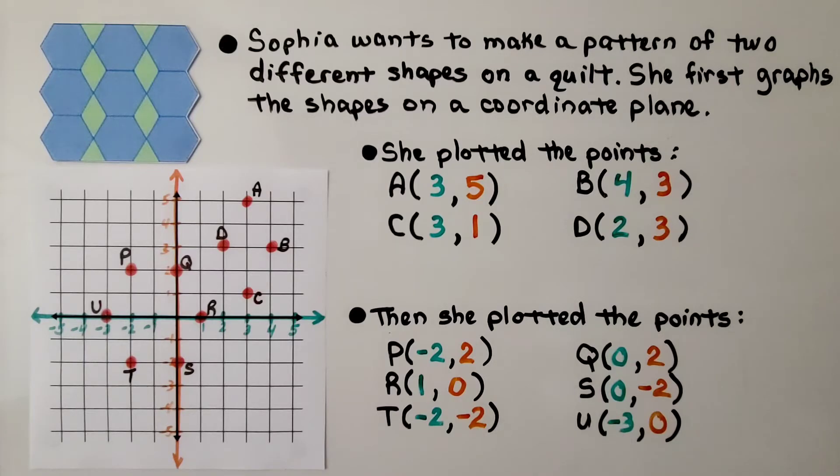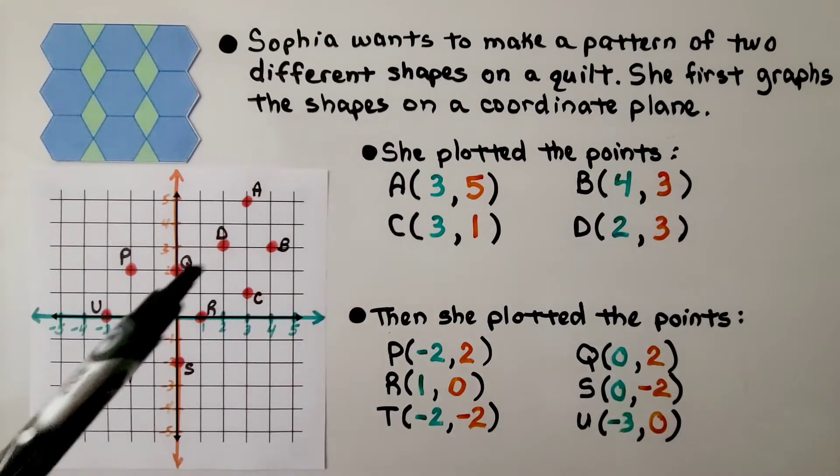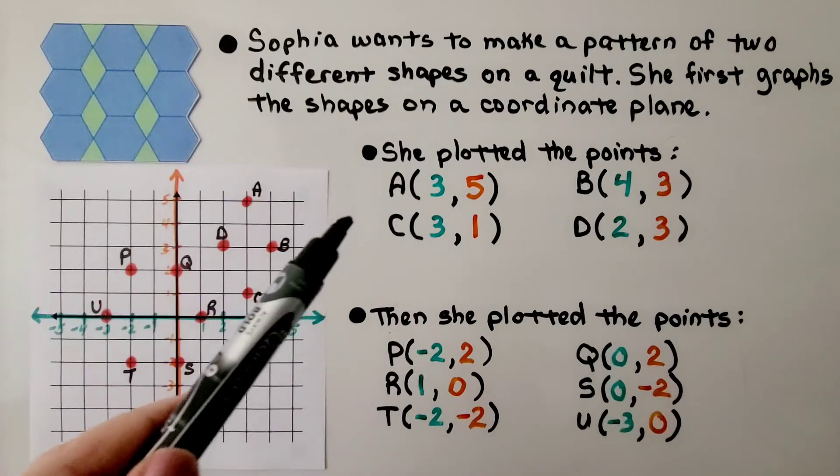Sophia wants to make a pattern of two different shapes on a quilt. She first graphs the shapes on a coordinate plane. So we have a hexagon and a rhombus. She plotted the points for the rhombus.